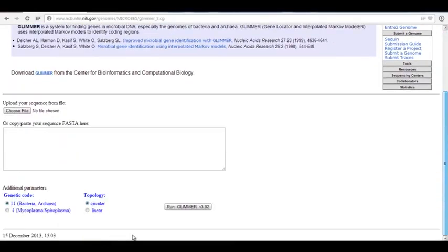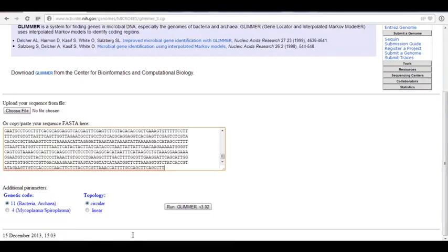So I'm going to paste this sequence. If it's a complete genome, then it would be circular, but this is not the complete genome. This is linear. I'm going to choose linear for topology and then run Glimmer.